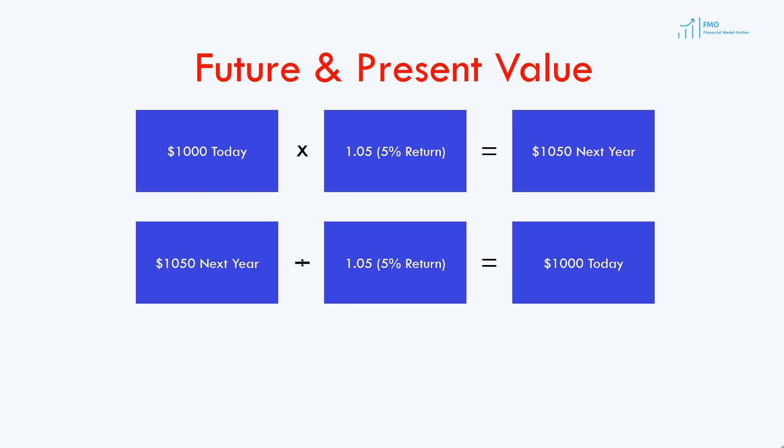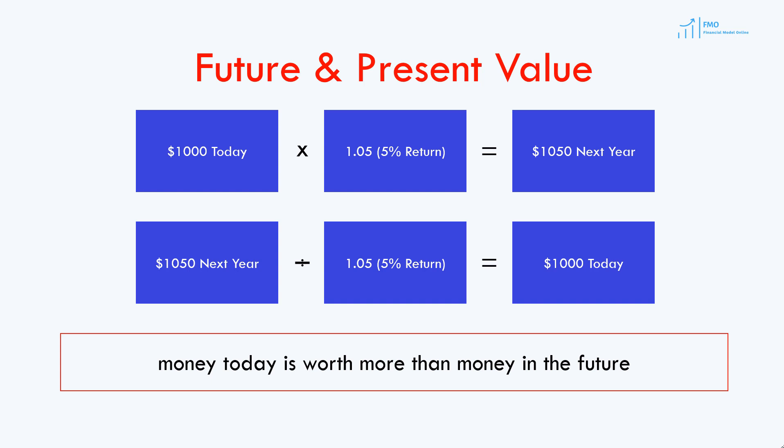The conclusion from our exercise is that money today is worth more than money in the future. Why? Because we can deposit money today into a bank account and earn interest income. Because we may not receive the money in the future. And because we generally prefer to consume and spend money today rather than defer our consumption to sometime in the future.